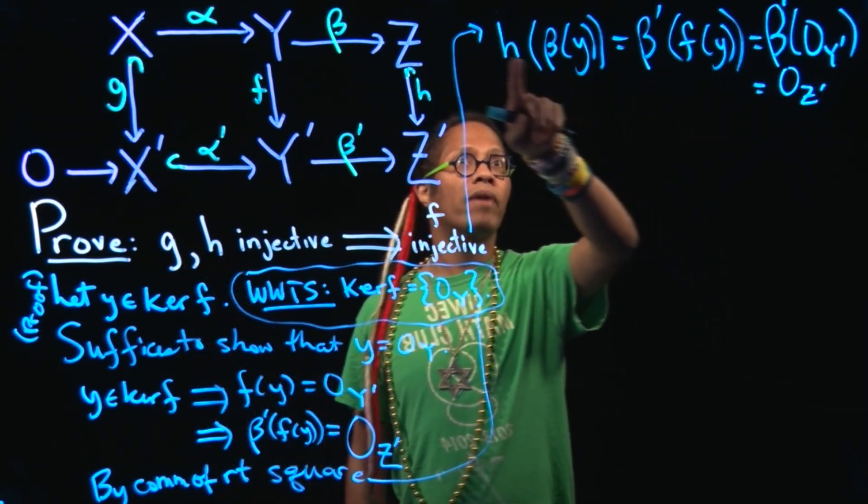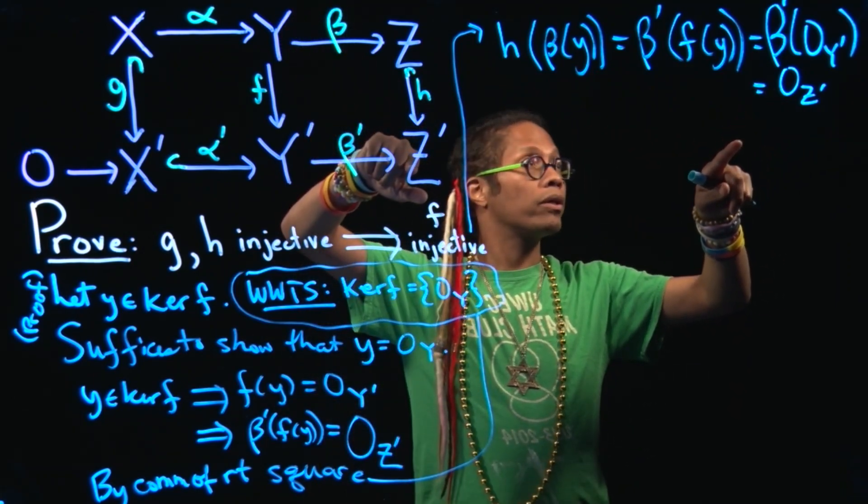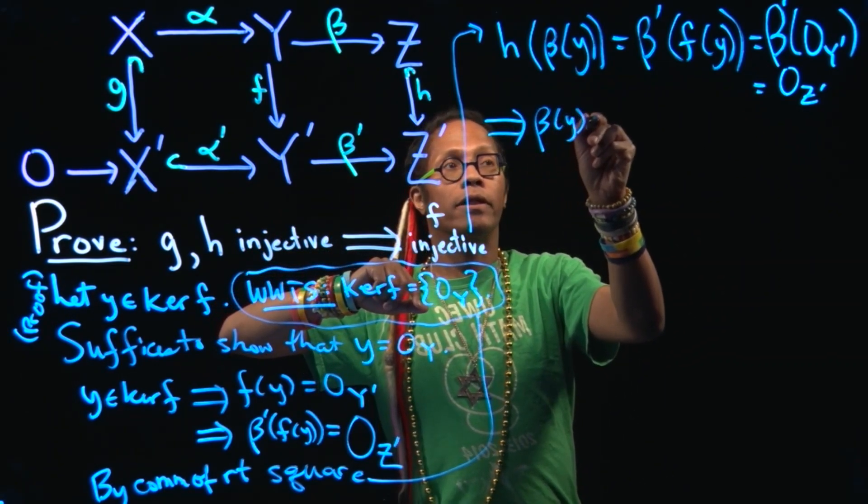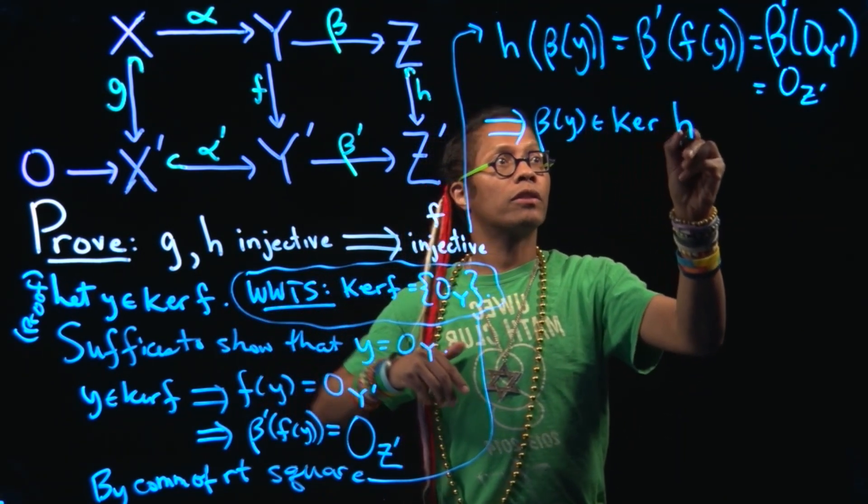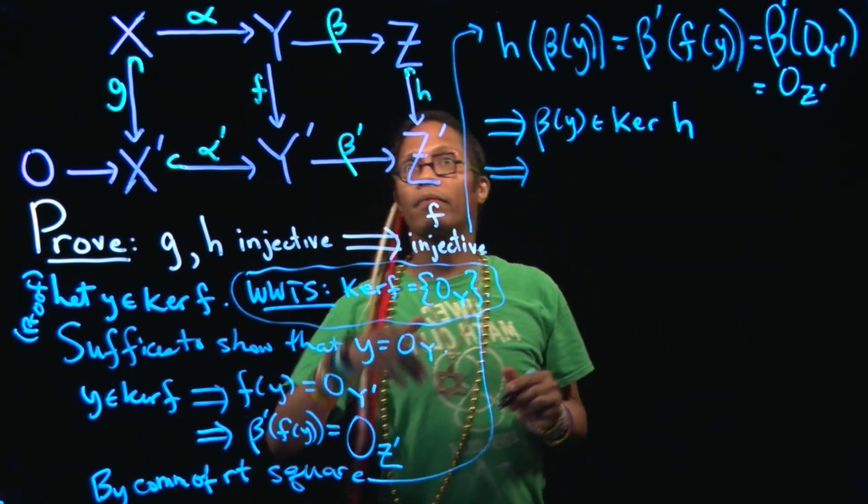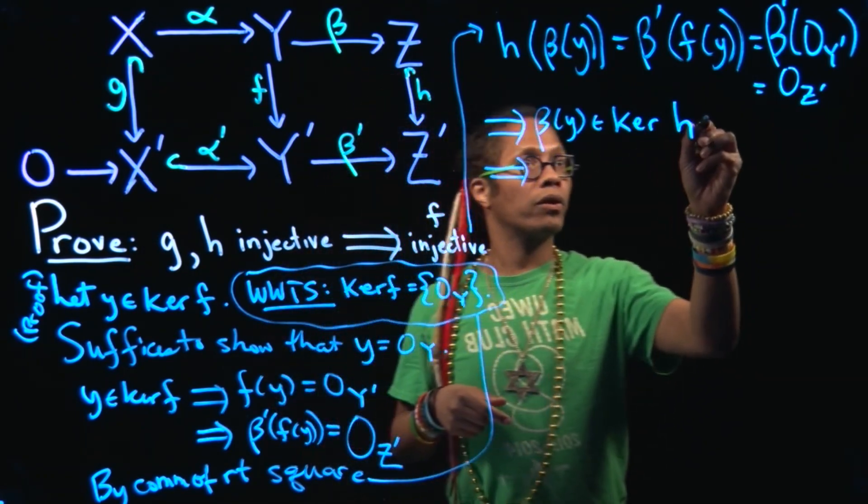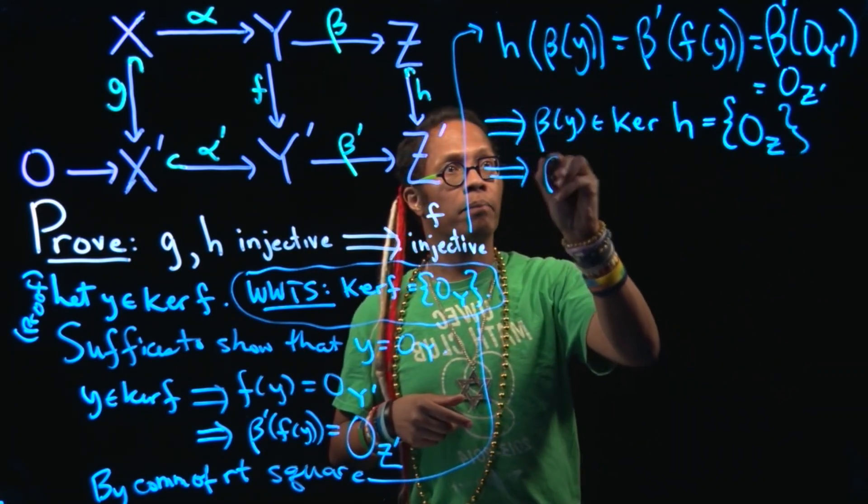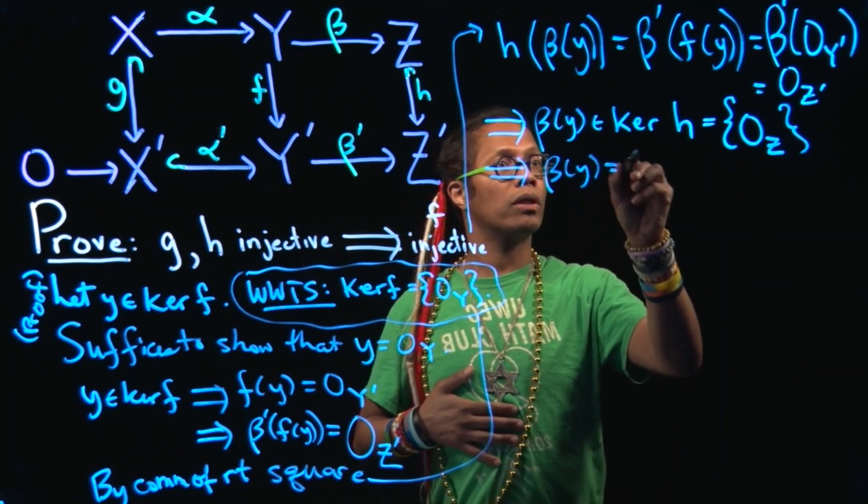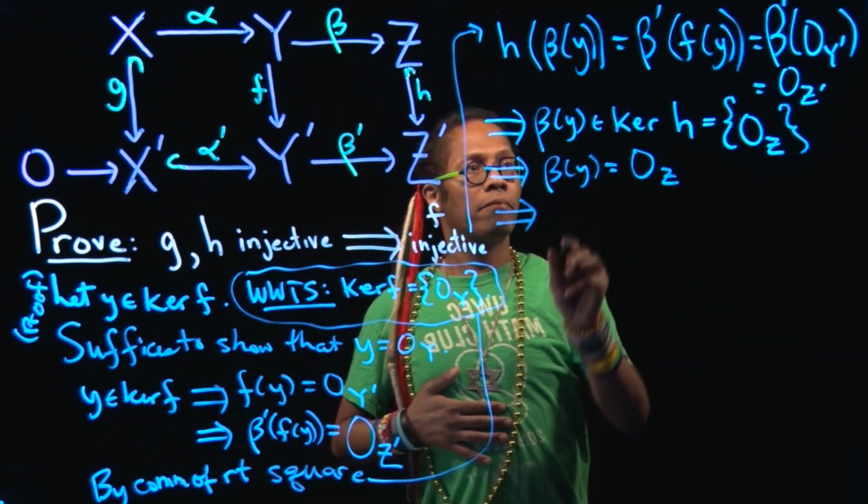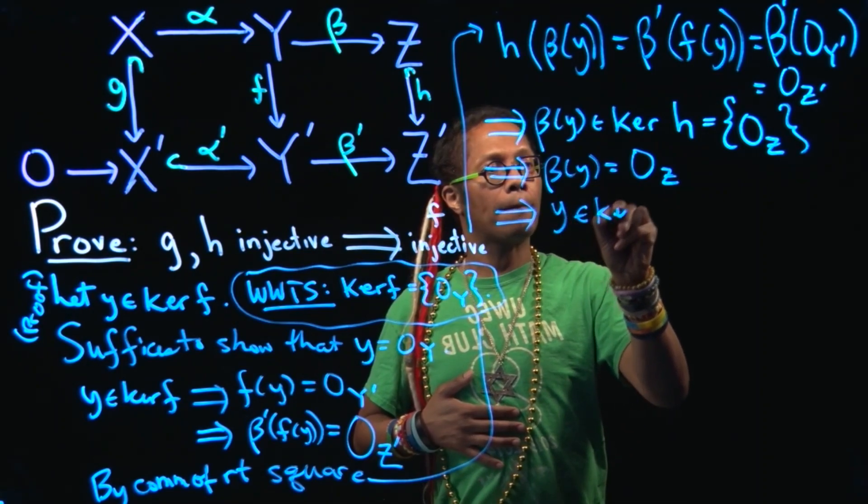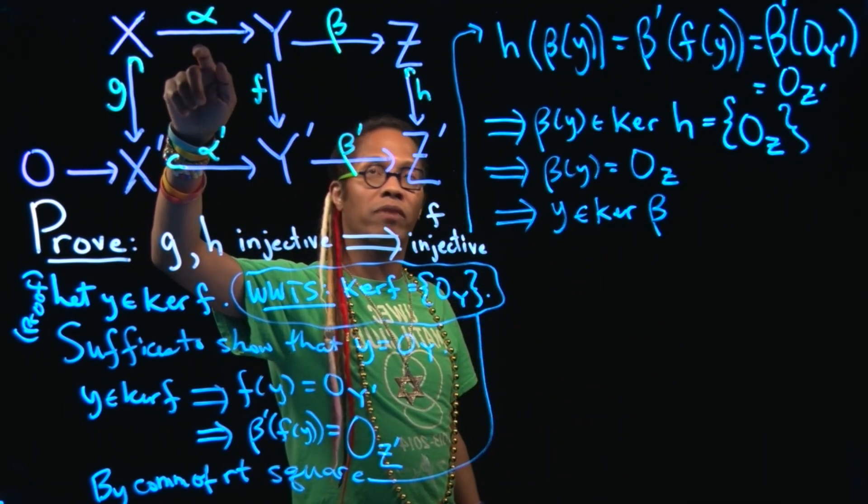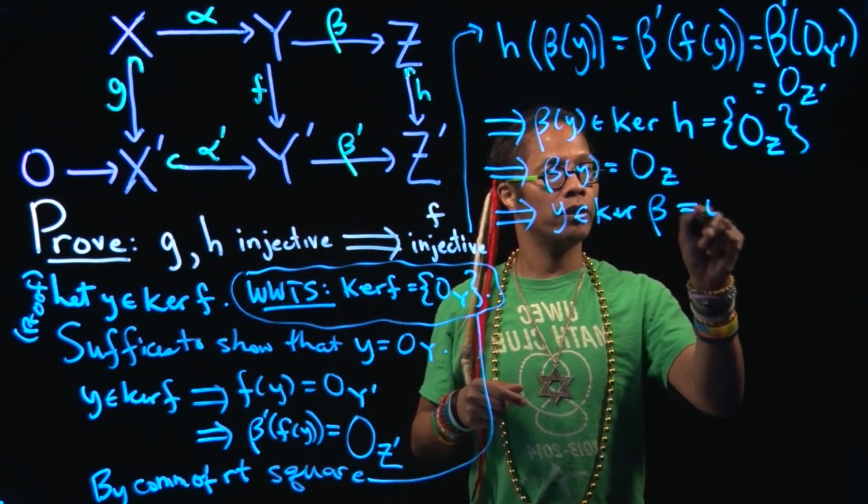So what do we have? I have H takes beta of Y to the 0 in Z prime. Hence that implies then that beta of Y is in the kernel of H. But by assumption H is injective. So this kernel of H is really just one element 0 sub Z. So that means that beta of Y in particular is equal to 0 sub Z. But that means then that Y is in the kernel of beta. But we have exactness in the first row. In particular exactness at Y says that the image of alpha is equal to the kernel of beta. So this kernel of beta is actually equal to the image of alpha.